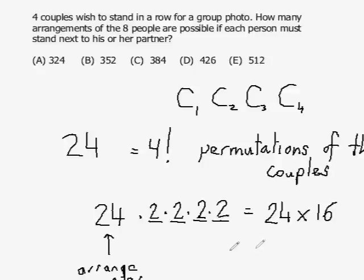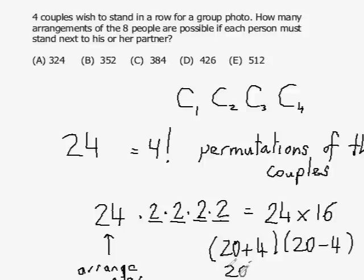And so I get 24 multiplied by 16. Now, how to multiply this? Well, we can multiply it the old-fashioned way, or just to remind you here, I can write this as 20 times four times 20 minus four, which is 20 squared minus four squared. 400 minus 16, 384.